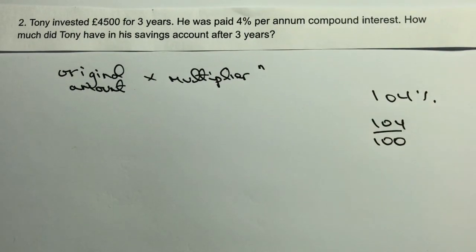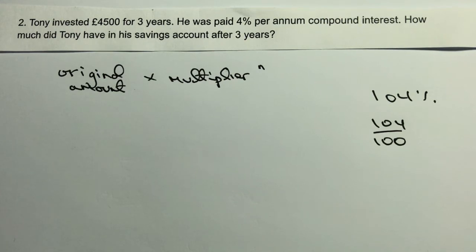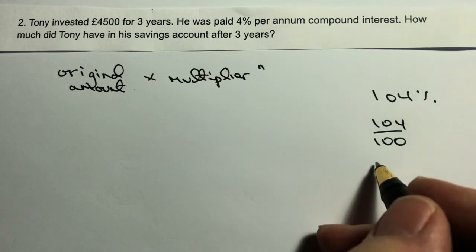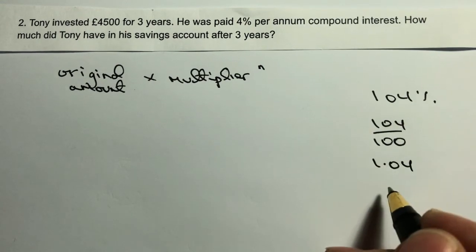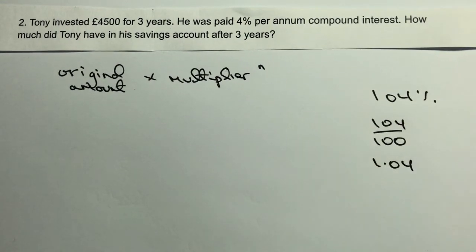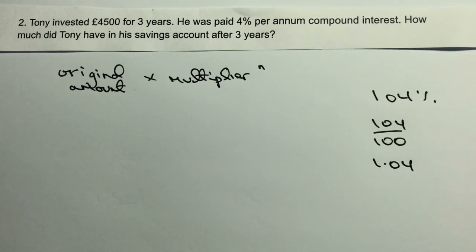It has exactly the same meaning, but it just makes it a little bit easier for us, because now we can divide 104 by 100 by moving the decimal point 2 places. So we can write this as 1.04, and that's exactly the same as 104%.